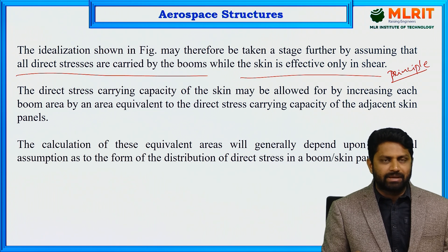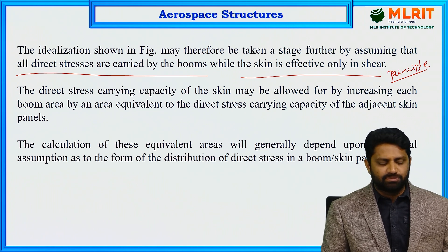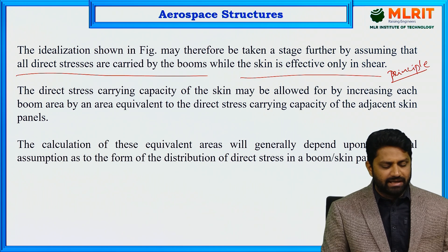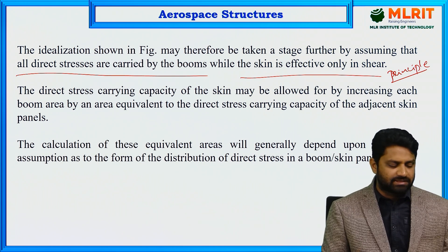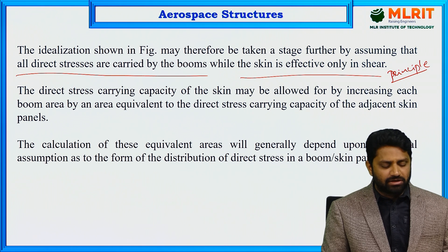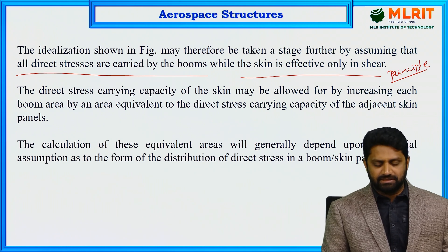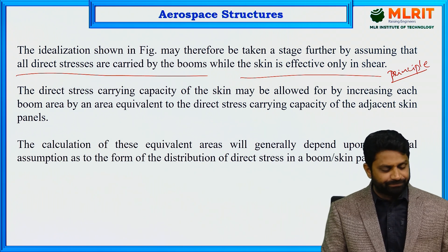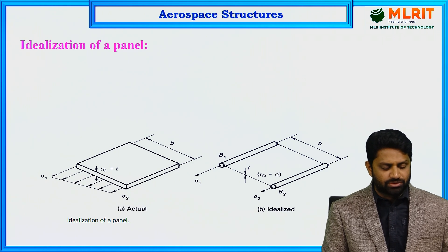The direct stress carrying capacity of the skin may be allowed for by increasing each boom area by an area equivalent to the direct stress carrying capacity of the adjacent skin panels. The calculation of these equivalent areas will generally depend upon an initial assumption as to the form of the distribution of direct stress in a boom or skin panel.